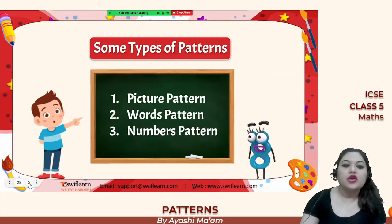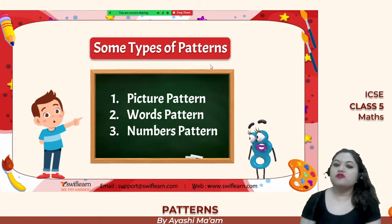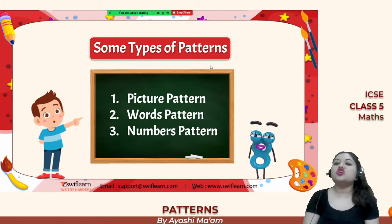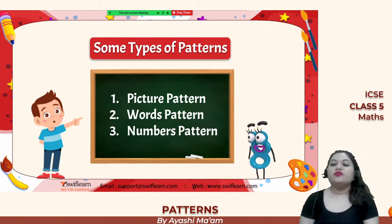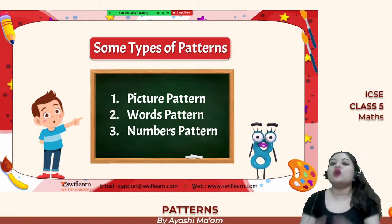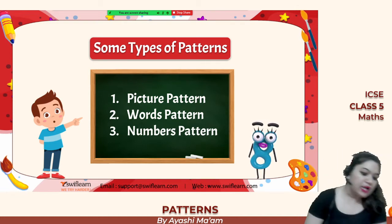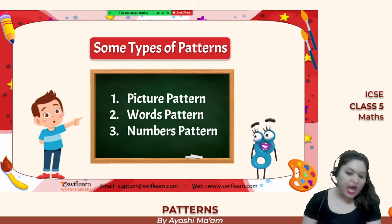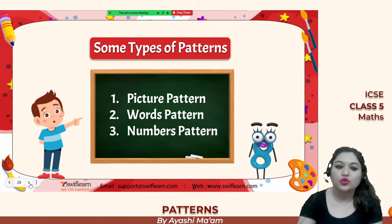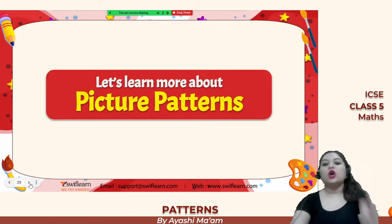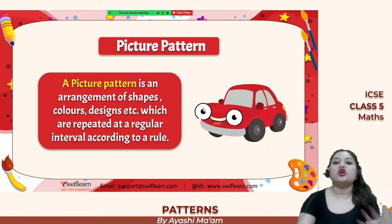There are mainly three types of patterns: picture pattern — when pictures are arranged by some rule; words pattern — when words are arranged in a certain rule; and numbers pattern — when numbers are arranged according to a specific rule.